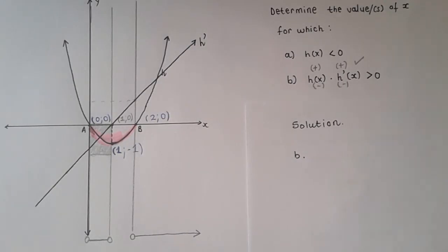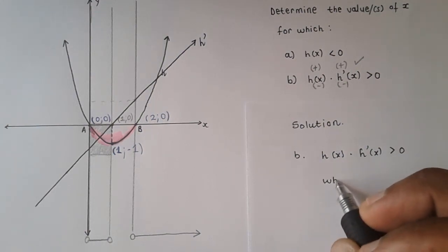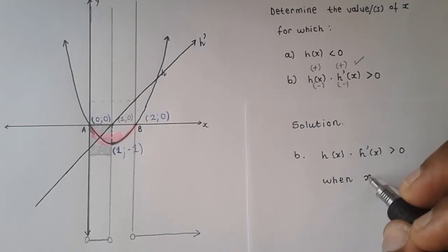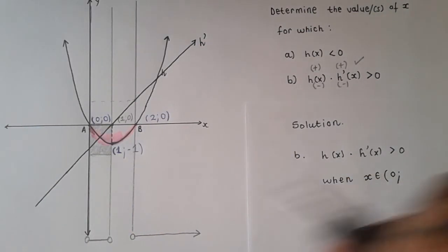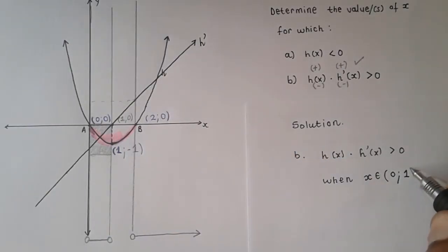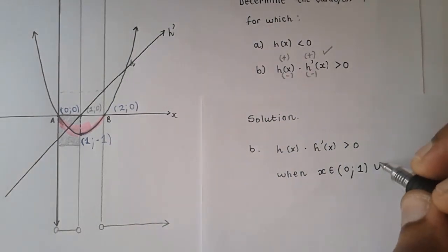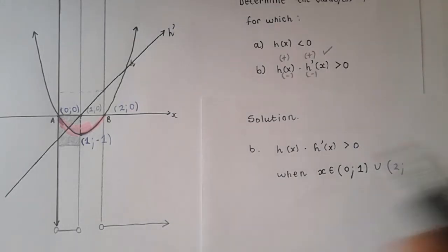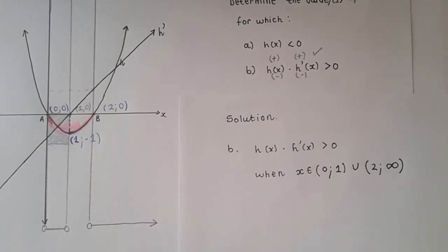To write the solution: h of x times h prime of x is greater than 0 when x is an element of the open interval (0, 1), union the open interval (2, infinity). That was our first example of looking at graph interpretation. I hope that helps.